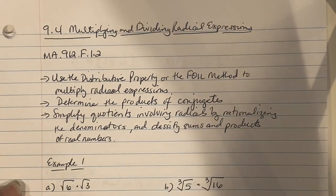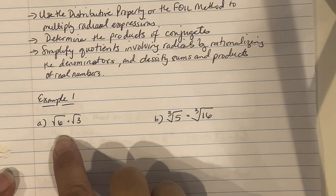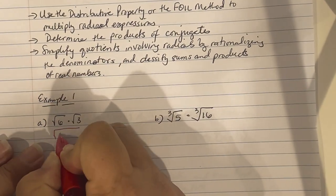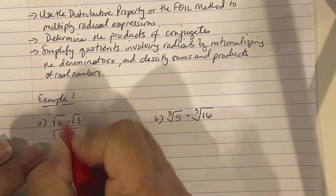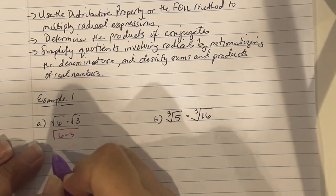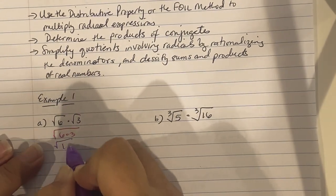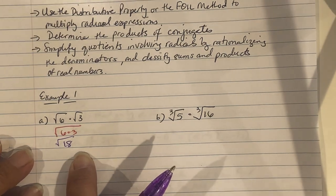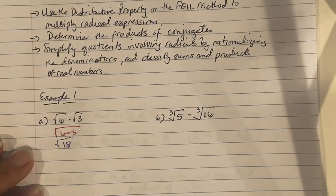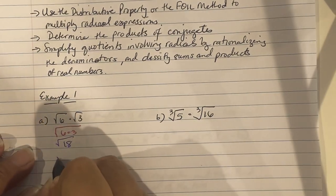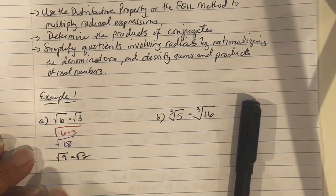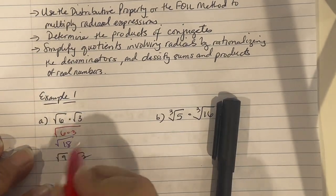Example 1a: square root of 6 times the square root of 3. We combine them under one radical: square root of 18. Now 18 can be written as a perfect square part and a non-perfect part — 9 times 2. The square root of 9 is 3, so the answer is 3 square root of 2.